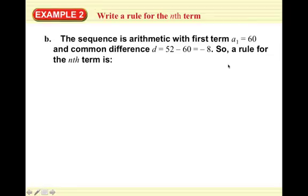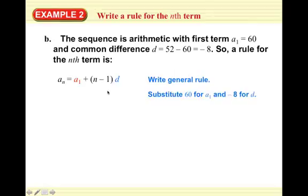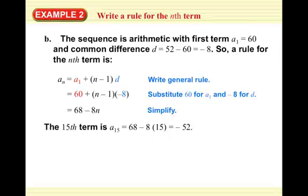A rule for the nth term substituting 60 for A1 and negative 8 for D gives us 60 plus (N minus 1) times negative 8. We distribute the negative 8 and combine like terms to get 68 minus 8N. To find the 15th term, plug in 15 for N: A15 equals 68 minus 8 times 15, which gives us negative 52.